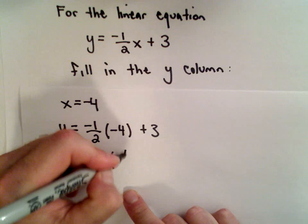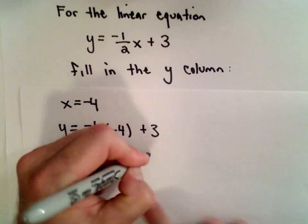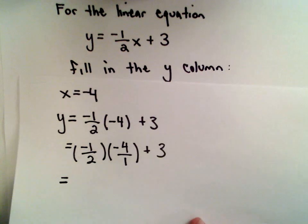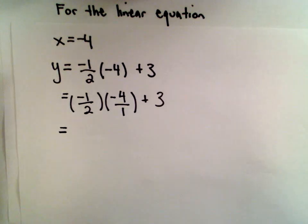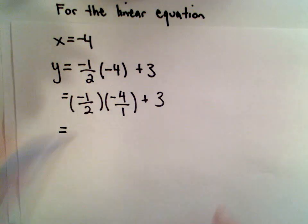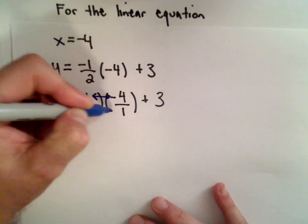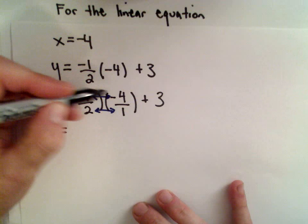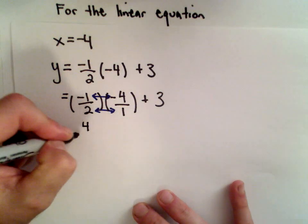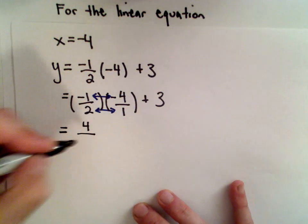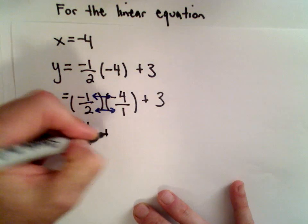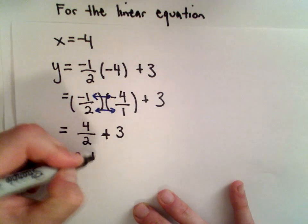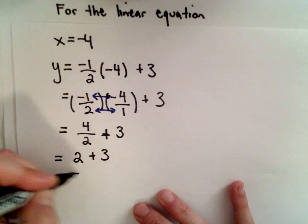Negative 4 can be written as negative 4 over 1. I'll put some parentheses around the negative 1 half just to visually break it up — not necessary, but it looks a little better. When you have fractions, you multiply across the top (the numerator) and across the bottom (the denominator). So on top I have negative 1 multiplied by negative 4, which gives me positive 4. 2 multiplied by 1 gives me 2. I still have my positive 3. So 4 divided by 2 is 2, plus 3 equals 5.